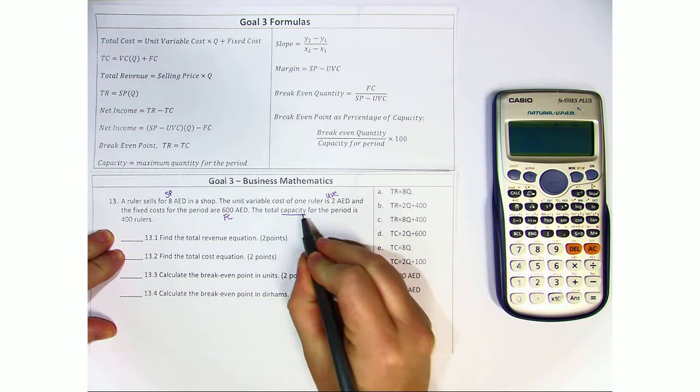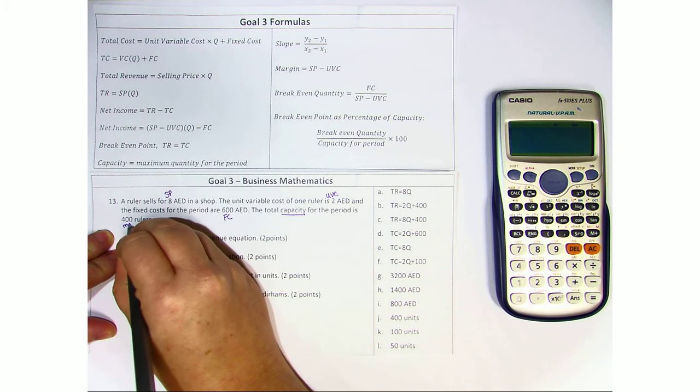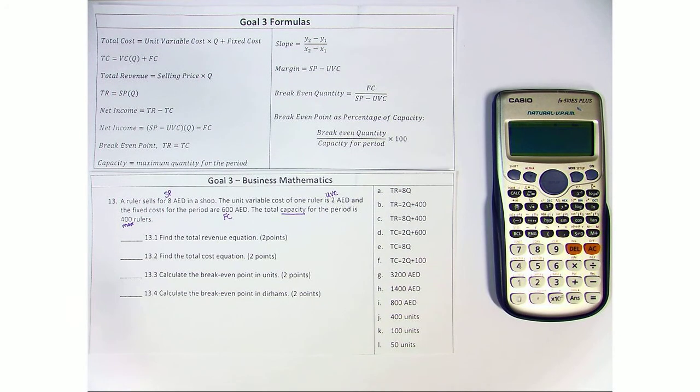When it says capacity, that doesn't mean the quantity. That simply means the maximum that it's allowed to be. So let's go ahead and start by looking at the first part: find the total revenue equation.